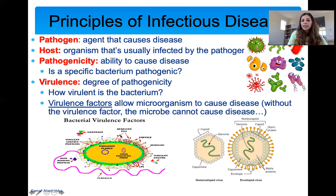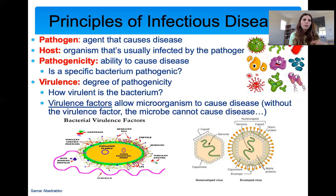Virulence is how much something causes disease — it's the degree of pathogenicity. If I say one organism is more virulent than another, it causes more disease. For example, the influenza virus is way less virulent than the HIV virus. SARS-CoV-2, which we have right now, is more virulent than a lot of coronavirus strains we've seen in the past. The more virulent something is, the more pathogenic it is, the more disease it causes.